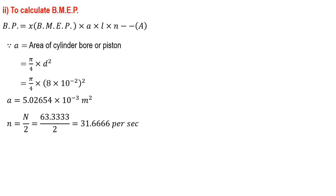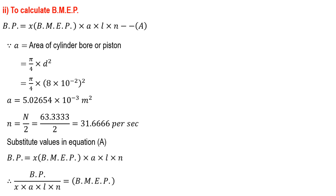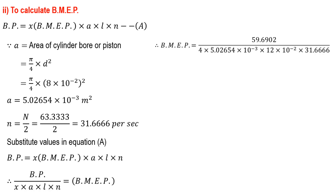For a 4-stroke engine, the number of working strokes is N divided by 2, because there is one power stroke every two crankshaft revolutions. That gives 31.6666 working strokes per second. Rearranging equation A, brake mean effective pressure equals brake power divided by (number of cylinders times area times stroke length times working strokes per second). Substituting all values gives brake mean effective pressure as 781.2521 kN/m².